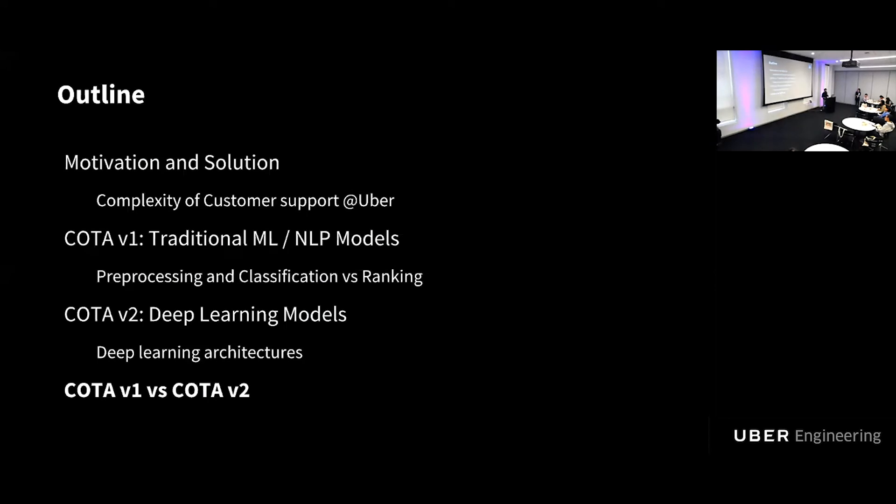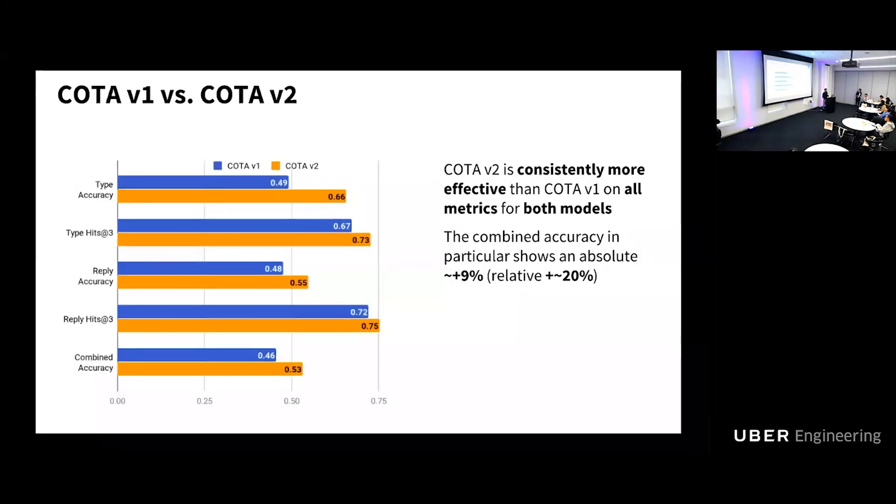So finally, we're going to talk about a comparison between COTA V1 and COTA V2. In particular, on all the different metrics that we care about, so accuracy on contact type, hit at three on contact type, accuracy on reply, and hit at three on reply, the COTA V2 models perform better. But in particular, what we care mostly about is the combined accuracy, and there the COTA V2 has a 20% relative improvement over COTA V1 models.